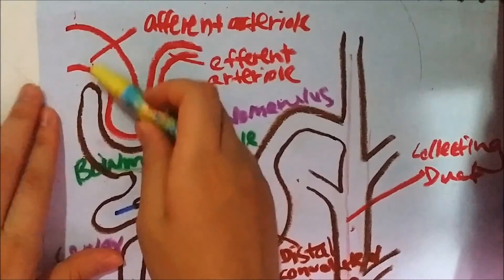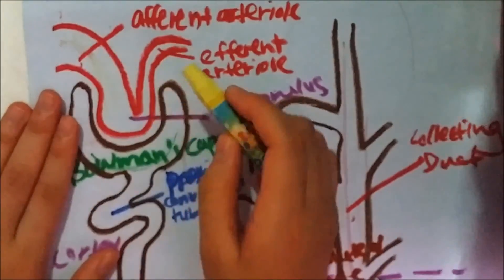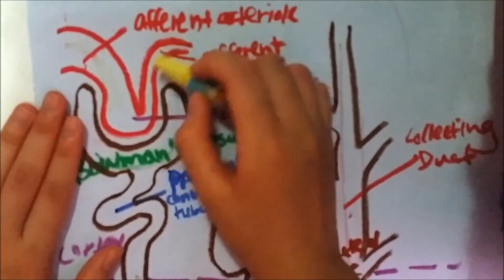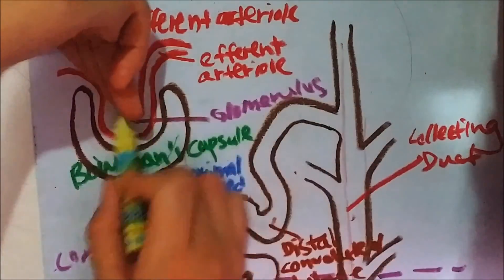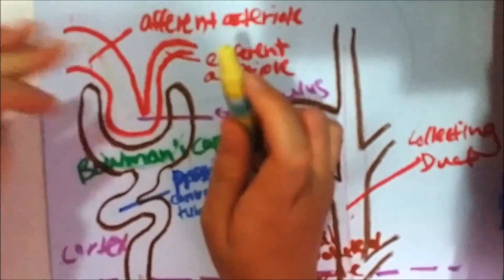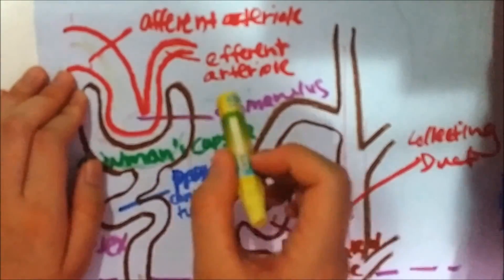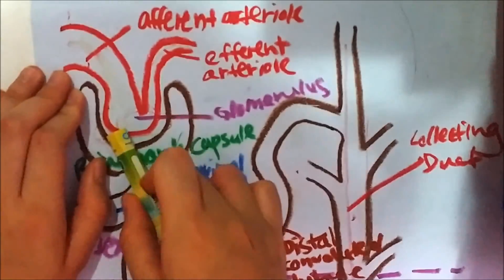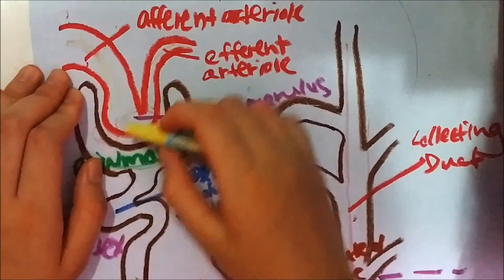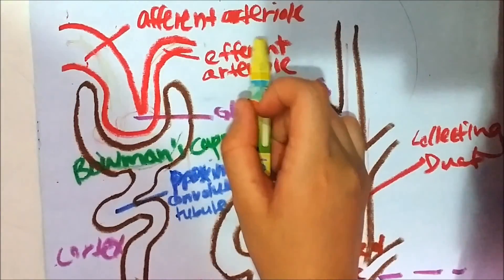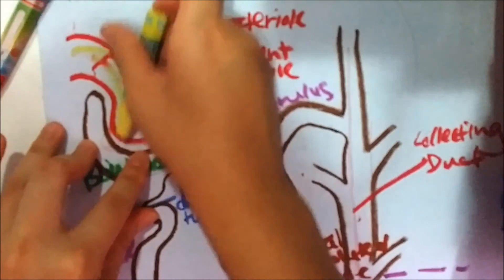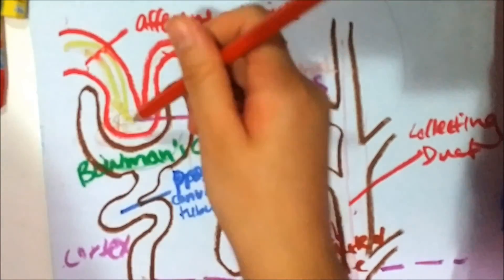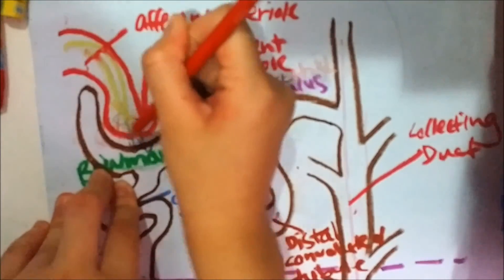The afferent arteriole has a larger lumen compared to the efferent arteriole. Therefore, more blood will flow into the glomerulus compared to what flows out via the efferent arteriole. This means the rate of blood flow into the glomerulus is higher than the rate of blood flow out, which creates a pressure that pushes blood into the Bowman's capsule.